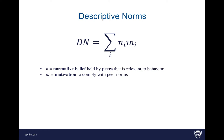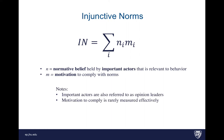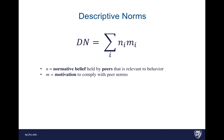Turning to descriptive norms — it's the same equation as injunctive norms, because it's still a norm and there's still a motivation to comply. The difference is that the norms are coming from peer groups instead of important actors.